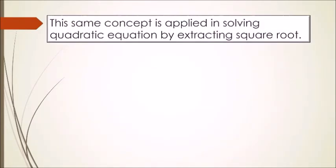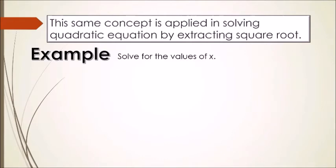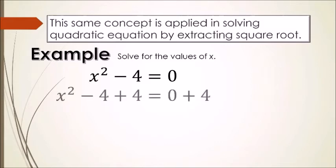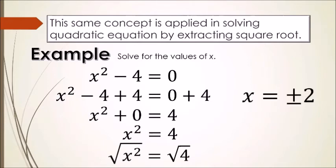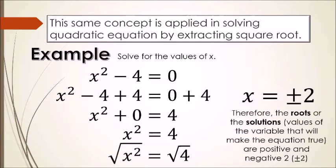This same concept is applied in solving quadratic equations by extracting square root. For example, solve for the values of x: x² − 4 = 0. Applying the addition property of equality, we add positive 4 on both sides, arriving at x² = 4. Then we extract the roots: √(x²) = x, and √4 = ±2. Therefore, the roots or solutions — the values of the variable that make the equation true — are x = +2 and x = −2.